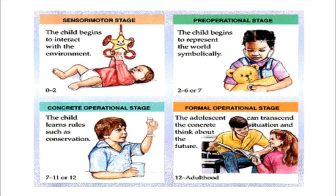Stage 3 is the concrete operational stage, from 7 to 11 years. The child is able to solve concrete problems. The law of seriation, classification, and reversibility are learned during this stage. Stage 4 is the formal operational stage, from 11 years onward. The child is able to solve abstract problems, and abstract and scientific thinking is developed during this stage.